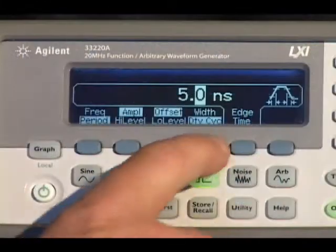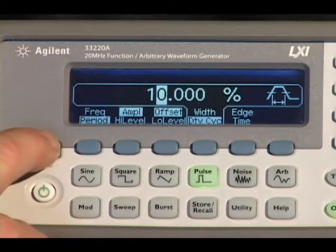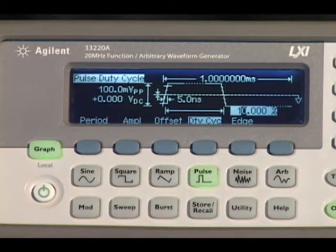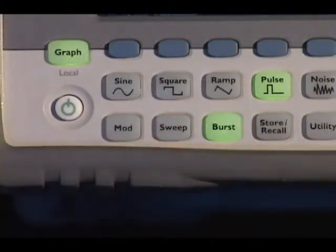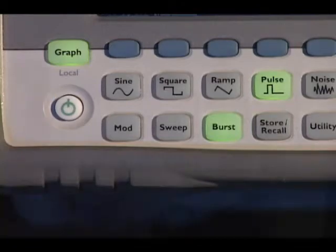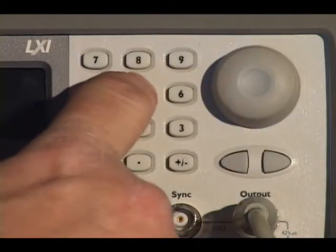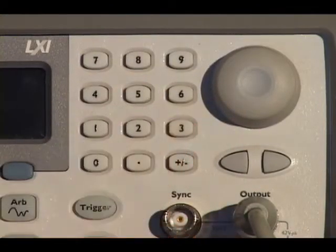Graph mode displays all setup parameters at once, eliminating confusion and highlighting the interaction of settings. Lighted front panel keys make it easy to see what functions have been selected. Settings are easily changed via the keypad or by advancing the rotary knob.